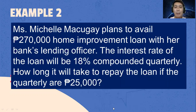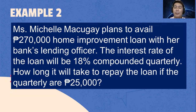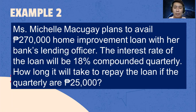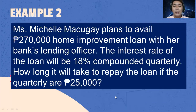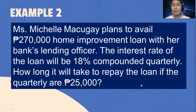Ms. Michelle Makugay plans to avail a 270,000 home improvement loan with her bank's lending officer. The interest rate of the loan will be 18% compounded quarterly. How long will it take to repay the loan if the quarterly payment is 25,000? Since Michelle is borrowing 270,000, this is a present value problem.